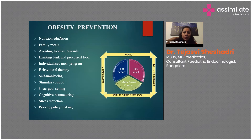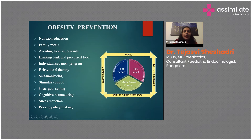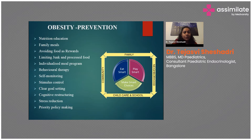Prevention of obesity is the key. The main prevention strategy is to eat smart, play smart, and make smart choices. Nutritional education is very important; all meals should be had as a family. Stop giving food as a reward, limit junk, processed, and packaged food, and encourage reading of nutritional labels. Provide individual meal programs, proper behavioral therapy, goal-setting, cognitive restructuring, and reduction of stress in schools and institutions.